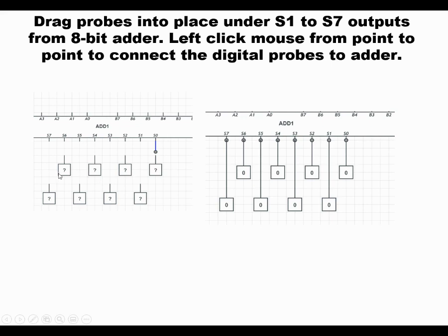Once you have them rotated, like showing here on the left side of this slide, you want to connect, you want to take the mouse and connect from point, click from point to point to connect them up like it shows on the right side of this slide. You can tell you've connected them up because they're going to suddenly show a zero in them.